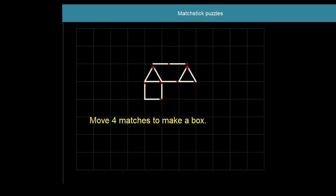This shape looks a bit like a house. We want to move four of those matches to make it look like a box shape. Four matches to make it look like a three dimensional box shape. Which four?